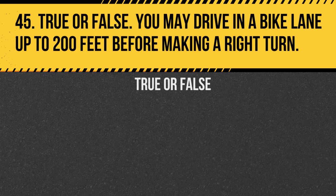Question 45. True or false: You may drive in a bike lane up to 200 feet before making a right turn. Answer: True. This is allowed for the purpose of making a safe right turn.